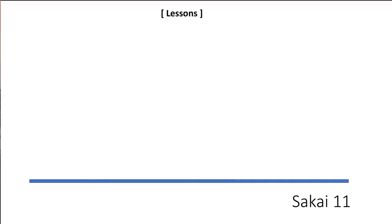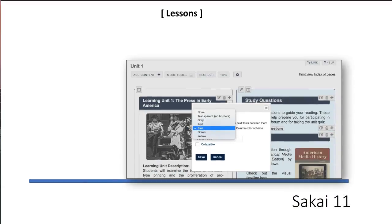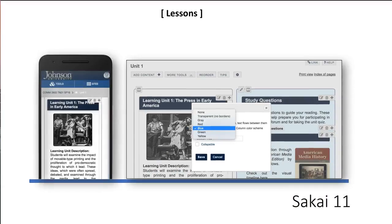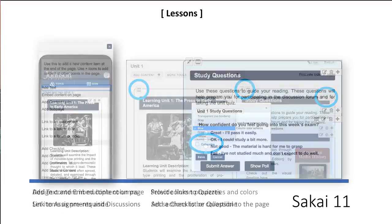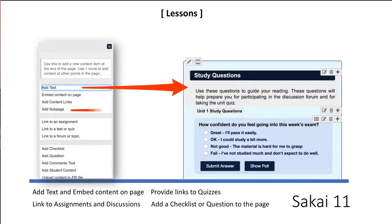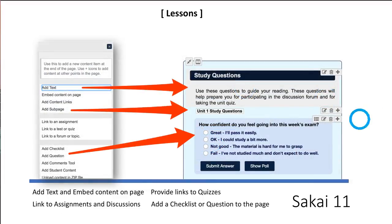Another significant improvement is in Sakai's Lessons tool. Lessons not only gets refinements as part of the responsive design of Sakai 11, it also adds functions for designing content in multiple columns, highlighting or calling attention to content with point-and-click color choices, and other features. Lessons retains all the great add content functions from Sakai 10, including the use of the rich text editor and add other content types.